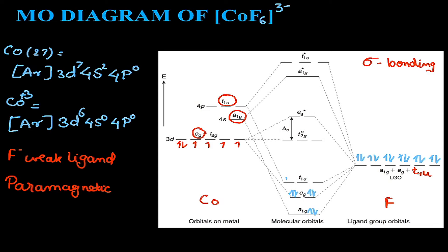The ligand electrons fill into the bonding molecular orbitals first. Once the bonding orbitals are filled, metal electrons go into non-bonding or antibonding orbitals. Since the magnitude of splitting is less than the pairing energy, pairing does not take place. The first three metal electrons go into t2g (non-bonding), the fourth and fifth go into eg (antibonding), and the sixth returns to t2g non-bonding. This is the MO diagram of CoF6^3-.